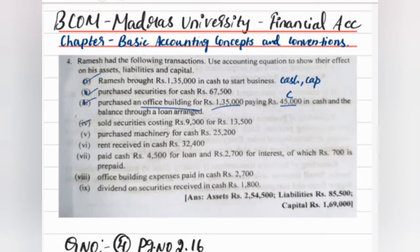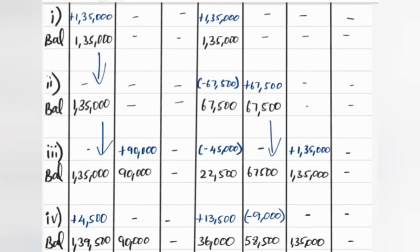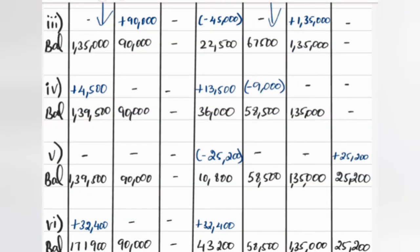Securities are sold — ₹9,000 worth of securities sold for ₹13,500. We are getting paid a profit. The securities cost ₹9,000 and the price is ₹13,500, so we have a profit of ₹4,500. As per the accounting equation approach, profit is shown in capital. In Roman numeral IV: first, minus ₹9,000 from securities. Then plus ₹13,500 to cash. The ₹4,500 profit goes to capital.